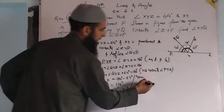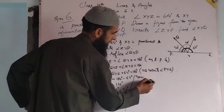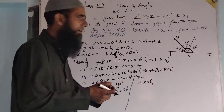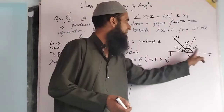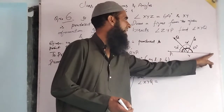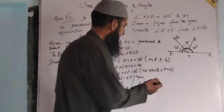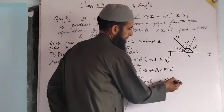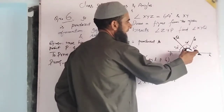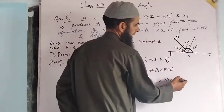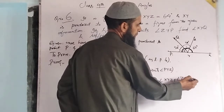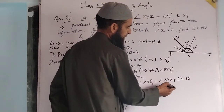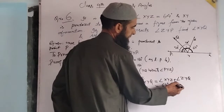Now, angle XYQ — we write angle XYQ as angle XYZ plus angle ZYQ, which equals 64 plus 58.